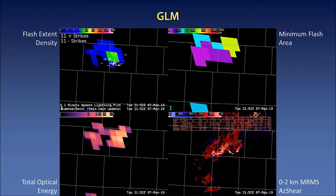Top left is your flash extent density. Top right is a new product that was tested called minimum flash area, which is the minimum size of any flashes given for any storm. Bottom left is total optical energy, and then the bottom right again is the merged zero to two kilometer azimuthal shear.